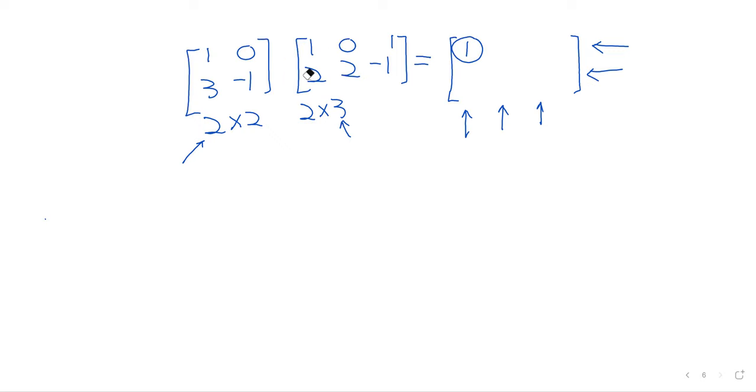And then we just repeat that. So if we now want this, it's the first row and the second column. So we take the first row and the second column, one times zero, zero times two. When we multiply and add those up, we get zero. And now we just keep doing this. It's obviously going kind of slow at the moment because I'm taking my time. But once you get used to this, it can be done pretty quickly.